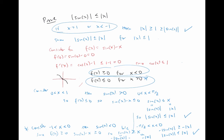So we've looked at basically this case where x is large in magnitude, the case where x is between zero and one, and the case where x is between negative one and zero. For all those cases, we have this inequality holds. And that is the end of the proof.